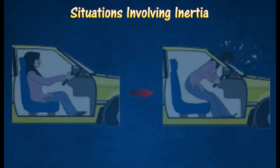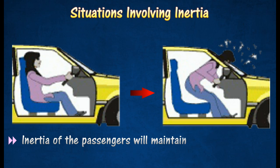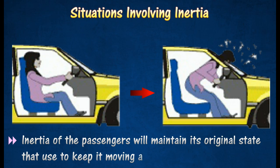The passengers of a car that is involved in a collision will be thrown forward at a very high speed, because the inertia of the passengers will maintain its original state — that is, to keep them moving at their original speed.